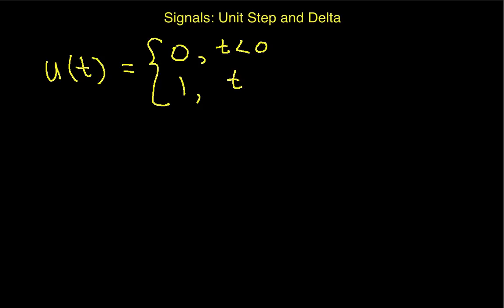If I graph this unit step function, it looks something like this. It's 0 for values of t less than 0, and then at a value of 0, it jumps up to 1. So, this distance here is 1. This is what u(t) looks like.